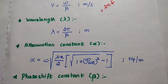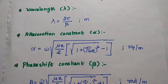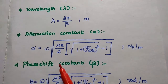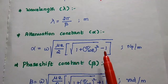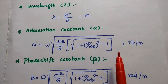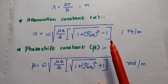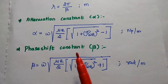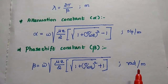The attenuation constant alpha can be obtained using the formula: alpha is equal to omega into square root of mu epsilon by 2, into square root of 1 plus sigma by omega epsilon the whole square, minus 1. Its unit is neper per meter. The phase shift constant beta uses the same formula, but with a plus sign instead of minus. Its unit is radian per meter.